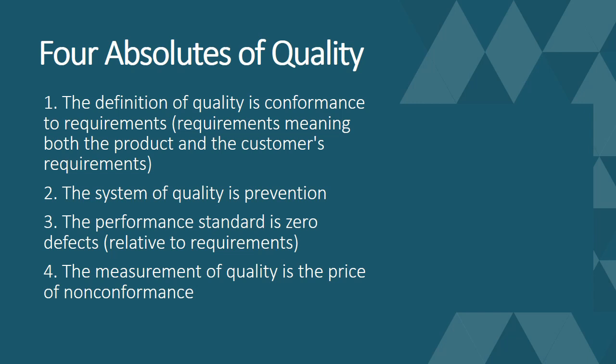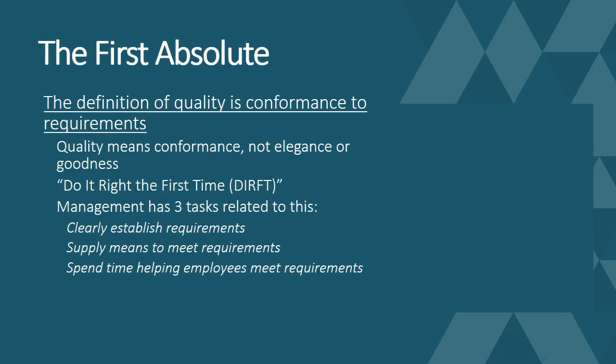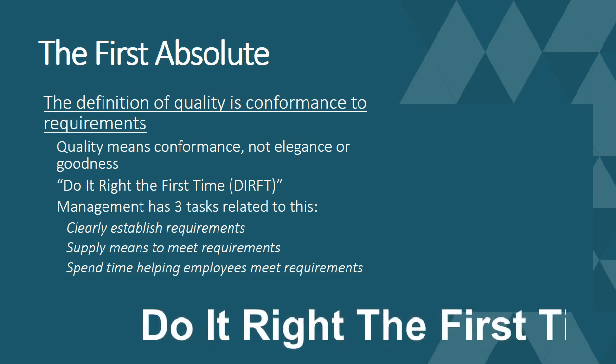We need to reduce the cost of quality — that's what Crosby emphasized in his fourth absolute. Coming back to the first absolute: definition of quality is conformance to requirements. Quality means conformance, not elegance or goodness. Quality is simply conforming to limits, specifications, tolerances, and acceptance criteria. If you meet those, you produce a quality product; if you don't meet your specifications, that product is not a quality product. Another aspect of this is to do it right the first time.